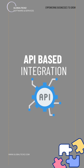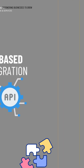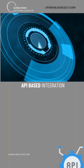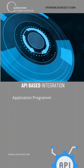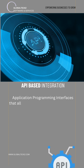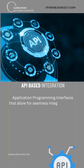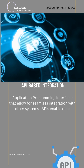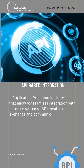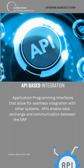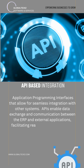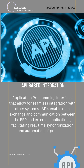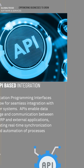Many modern ERP systems provide APIs, also called application programming interfaces, that allow for seamless integration with other systems. APIs enable data exchange and communication between the ERP and external applications, facilitating real-time synchronization and automation of processes.